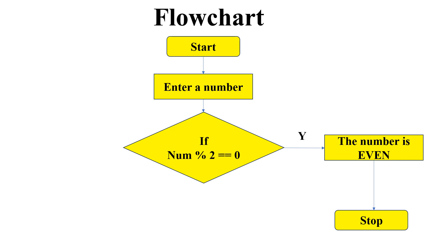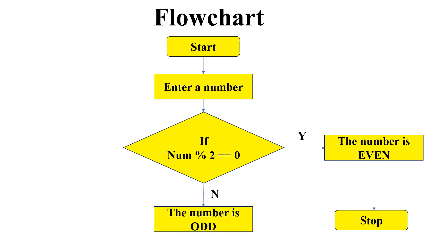Else, if the number modulus 2 is not equal to 0 — say for example an odd number is entered — dividing it by 2 will not give a remainder of 0. In such cases we conclude that the number is an odd number, and then stop the execution.